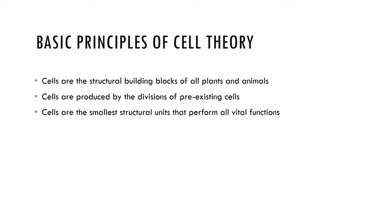The basic principles of cell theory are that cells are the building blocks of all plants and animals. Cells are produced by the division of pre-existing cells, through mitotic division for example. Cells are the smallest structural units that perform all vital functions. The cellular level is the smallest unit of life, and cells vary widely in size and shape according to their function.